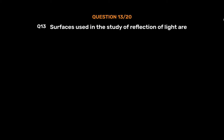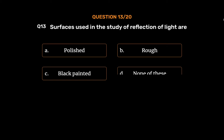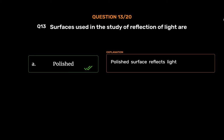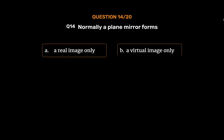Question No. 13: Surfaces used in the study of reflection of light are — Option A: Polished, Option B: Rough, Option C: Black Painted, Option D: None of these. The correct answer is Option A: Polished. Polished surfaces reflect light.